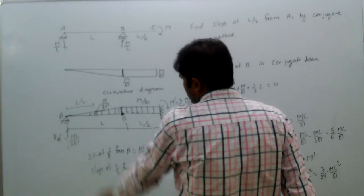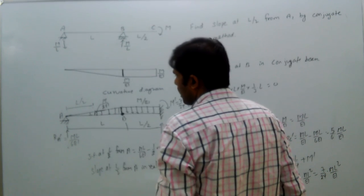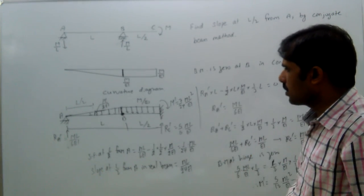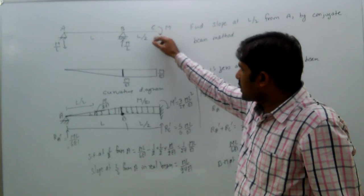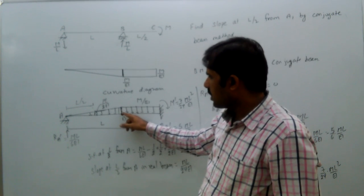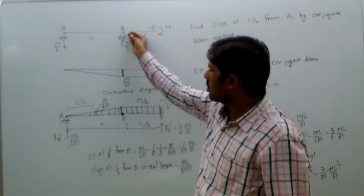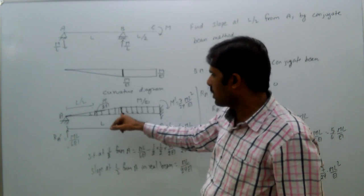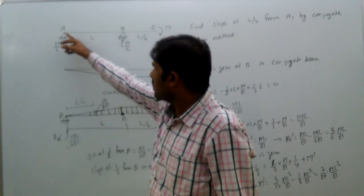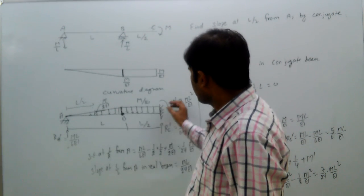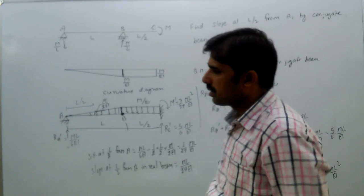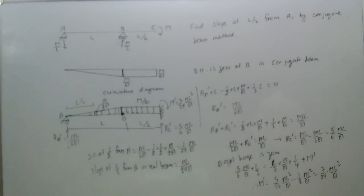In the conjugate beam, the shear force at any point represents the slope in the real beam, and the bending moment in the conjugate beam represents the deflection in the real beam. At a point, if the moment is 7/24 ML² by EI, then the deflection is that value. At the hinge, bending moment is zero means deflection is zero — because there is a support, no deflection is expected. This is the advantage of the conjugate beam method.